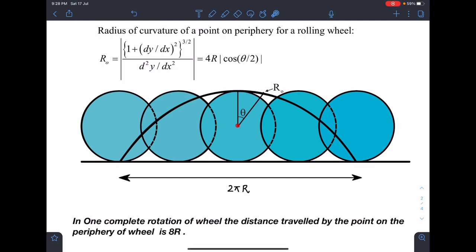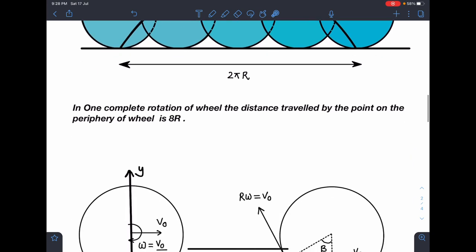From this vertical line at an angle of theta, at this particular point, if the radius of curvature is R₀ at this angle theta, that is given by 4R cos(θ/2). So guys, I'll suggest you remember this result. It may be very helpful in certain situations, and this is a very common result.